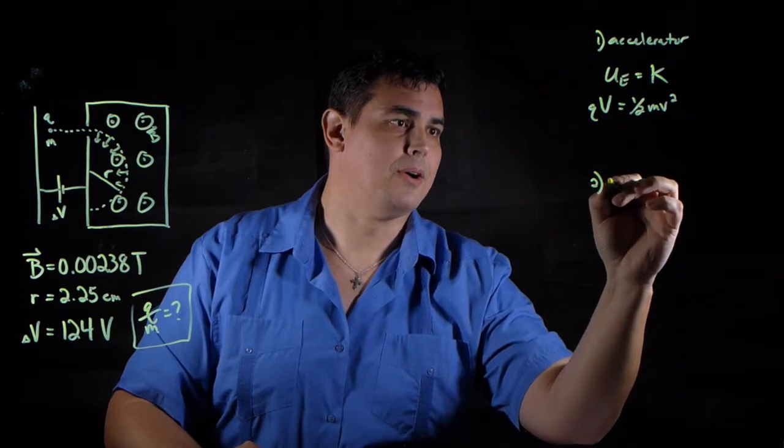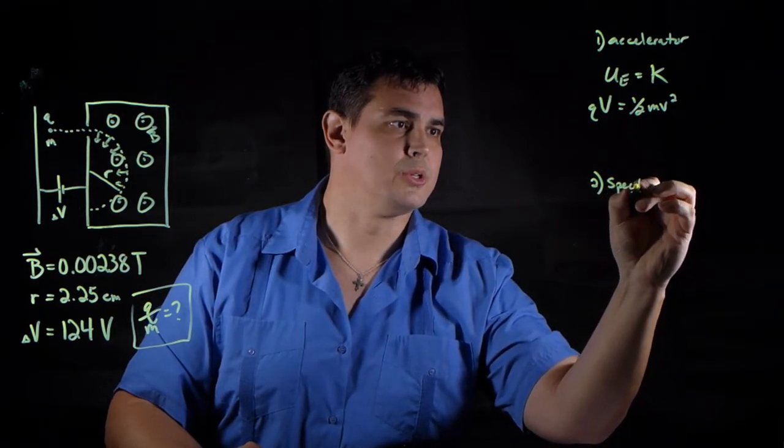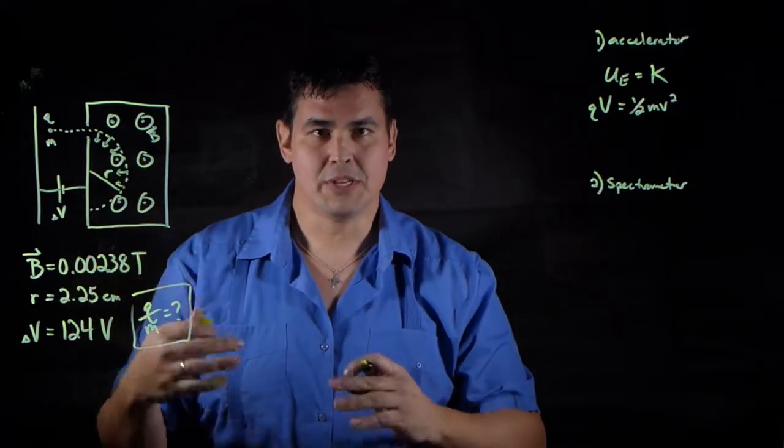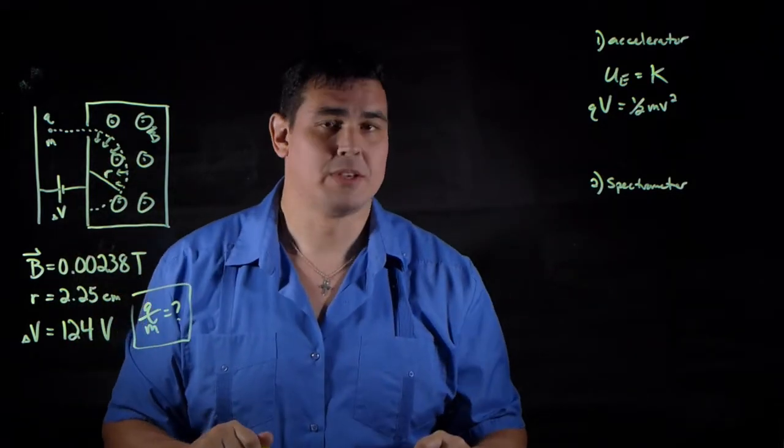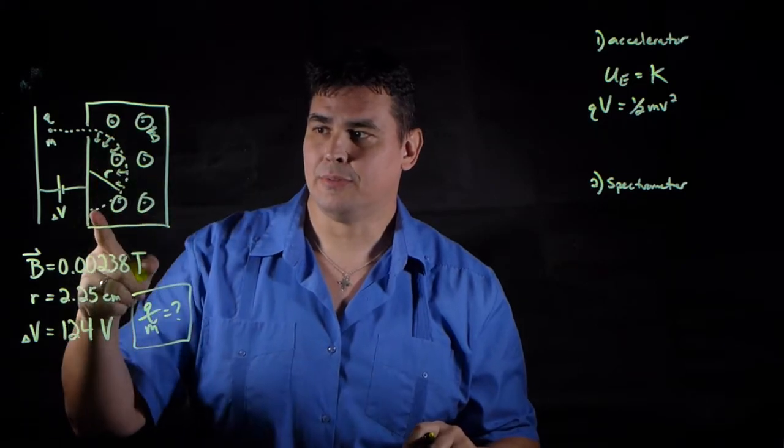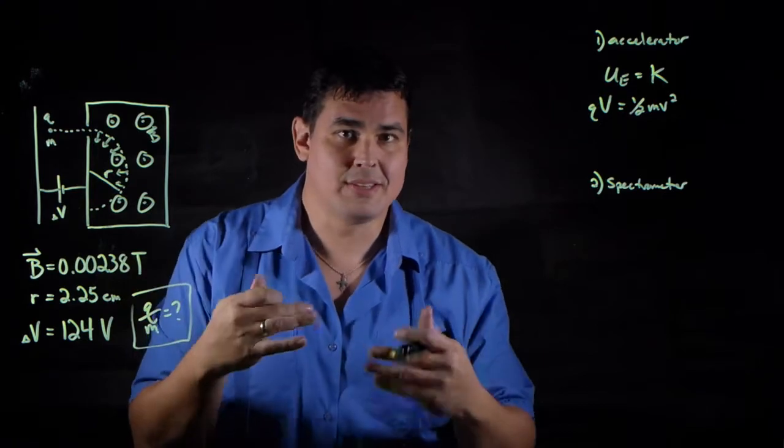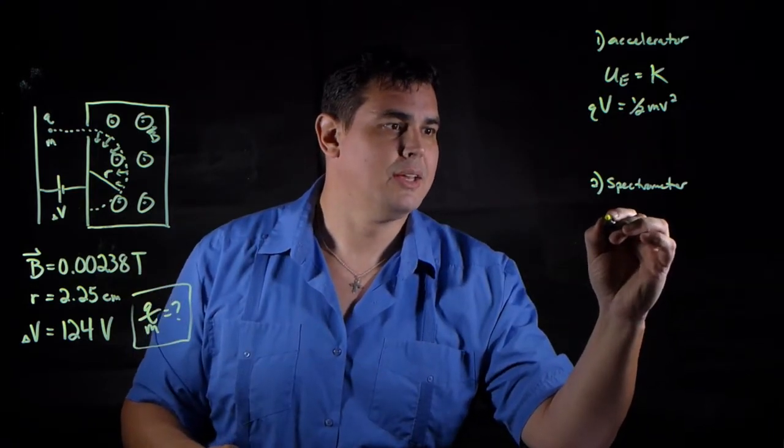The second part is the actual spectrometer part that takes everything and moves at a certain radius based on the mass. In here, this is an example of circular motion being caused by the Lorentz force. So inside there, the basic equation that relates the two...